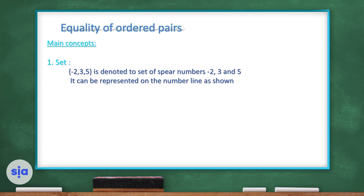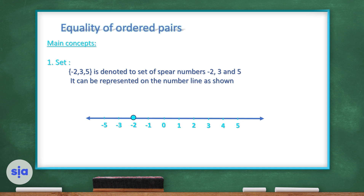As you can see here, this is the set {-2, 3, 5}. This set contains the three numbers: negative 2, 3, and 5. The set can be represented on a number line — here we're labeling negative 2, then 3, then 5 on the number line.